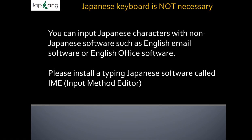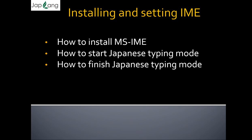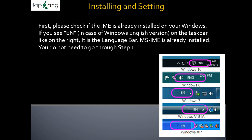What we need is to install typing Japanese software called IME — that's Input Method Editor. For Windows, we will be installing MS IME, which is provided by Microsoft and is already in the computer system as standard. For Mac, the typing Japanese software is called Kotoeri, provided on the Mac OS operating system. In this video, we'll learn how to install MS IME, how to start Japanese typing mode, and how to finish Japanese typing mode.